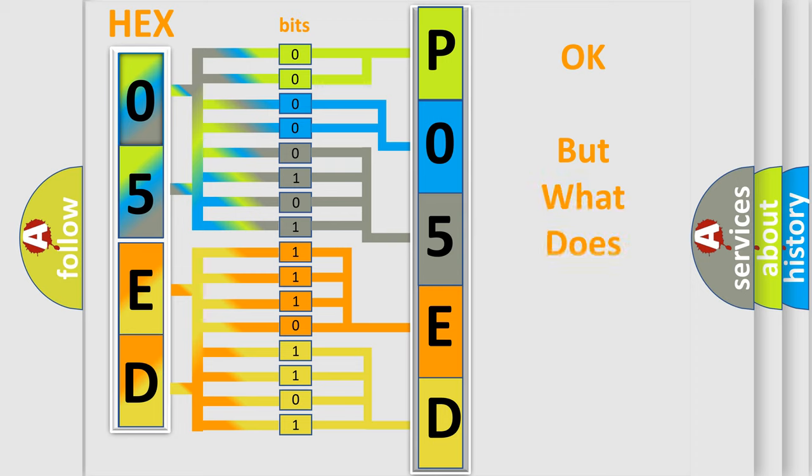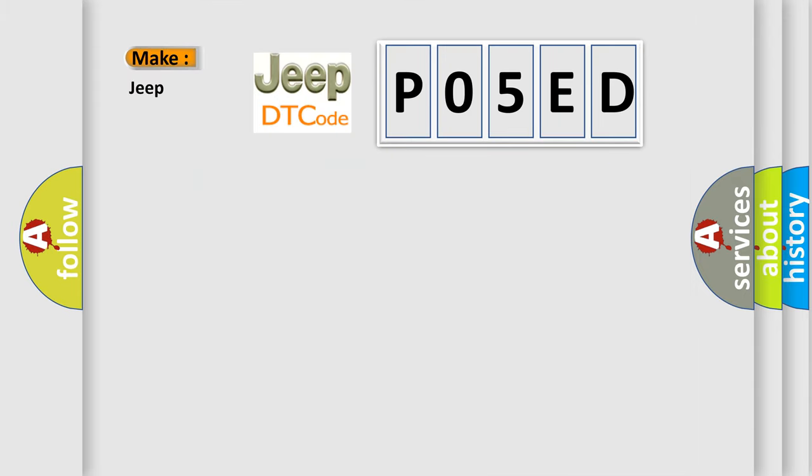The number itself does not make sense to us if we cannot assign information about what it actually expresses. So, what does the diagnostic trouble code P05ED interpret specifically for Jeep car manufacturers?